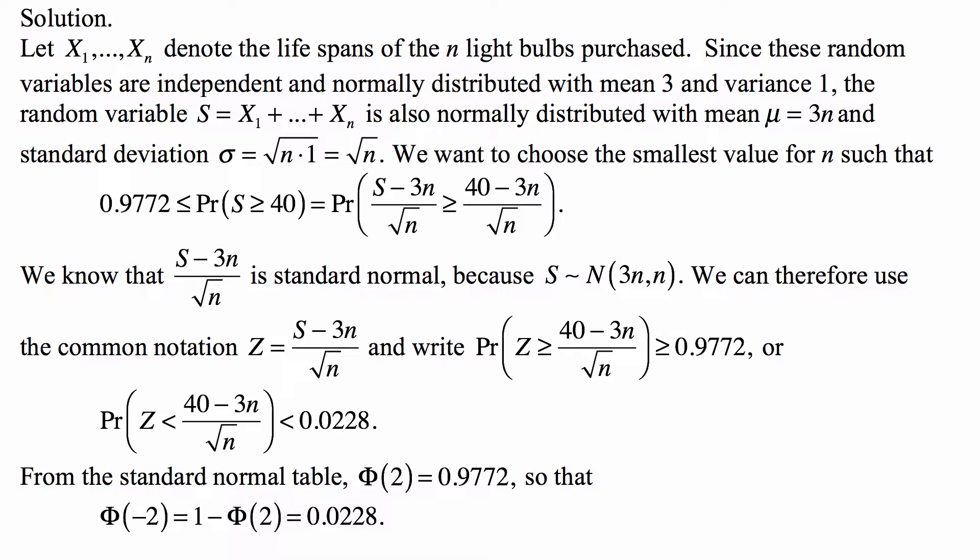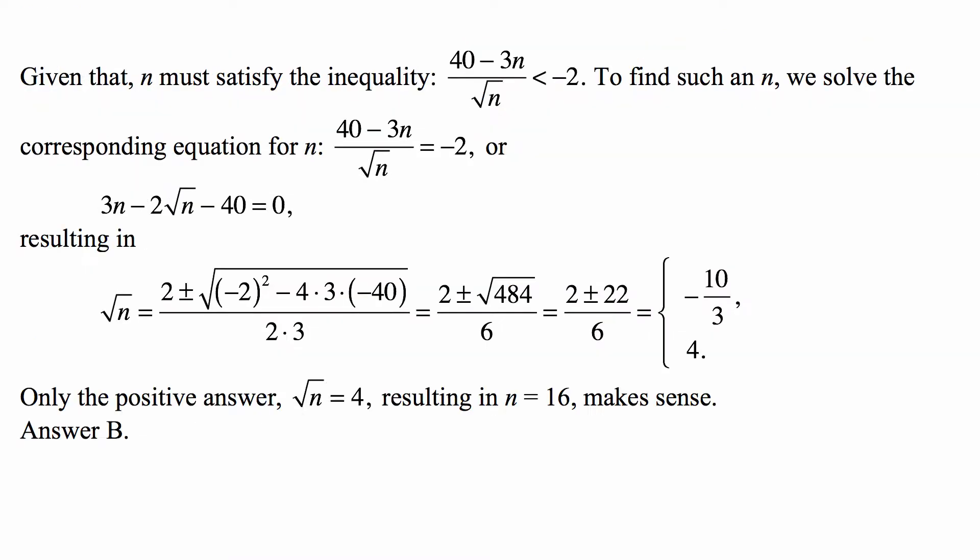So that's equal to 1 - 0.9772, which is 0.0228, and that's exactly the probability that we're dealing with. Given that, because the cumulative distribution function of a standard normal distribution is strictly increasing, we must have (40 - 3n) / √n < -2.